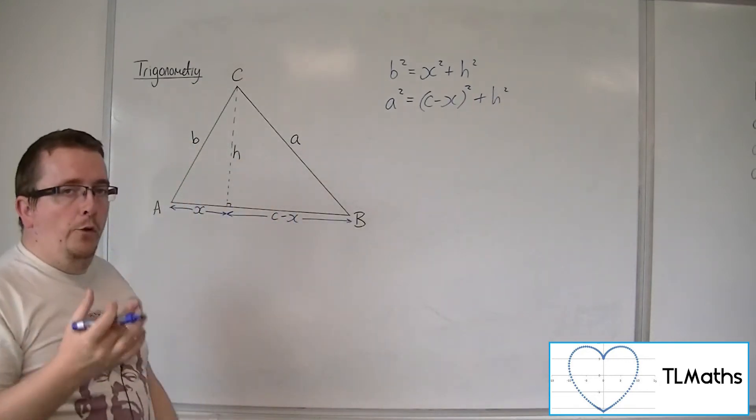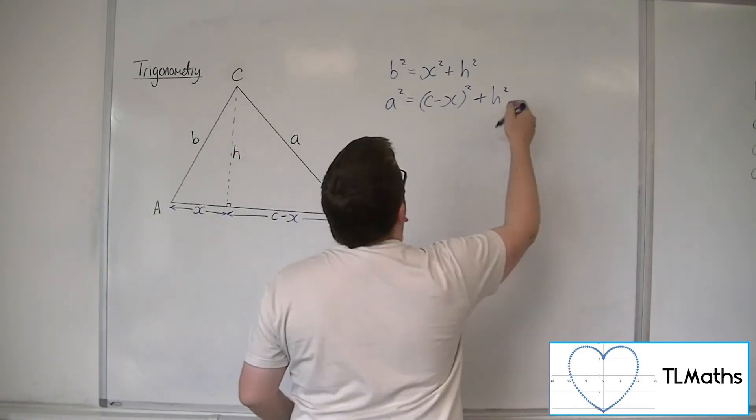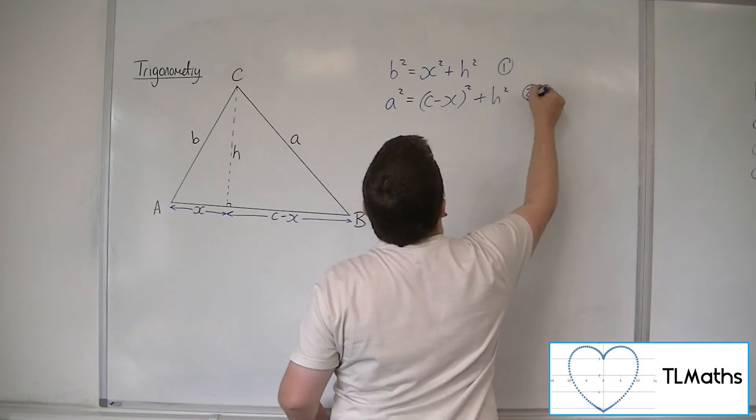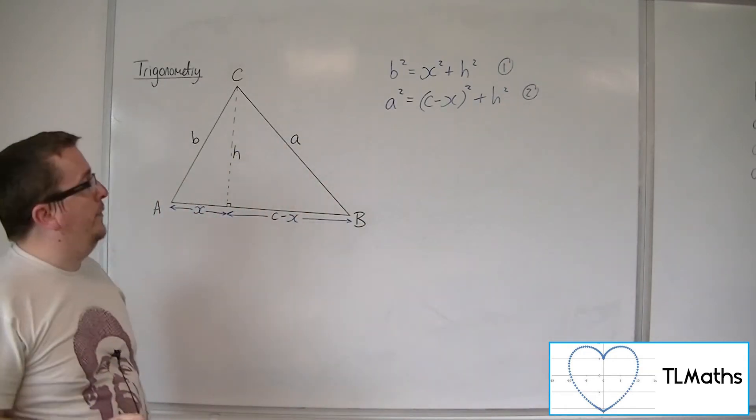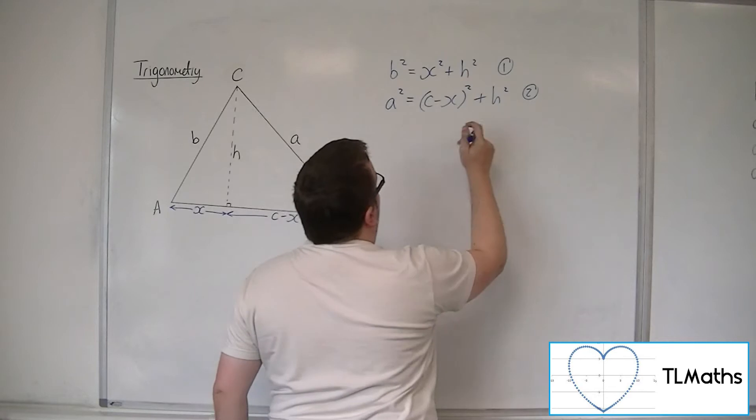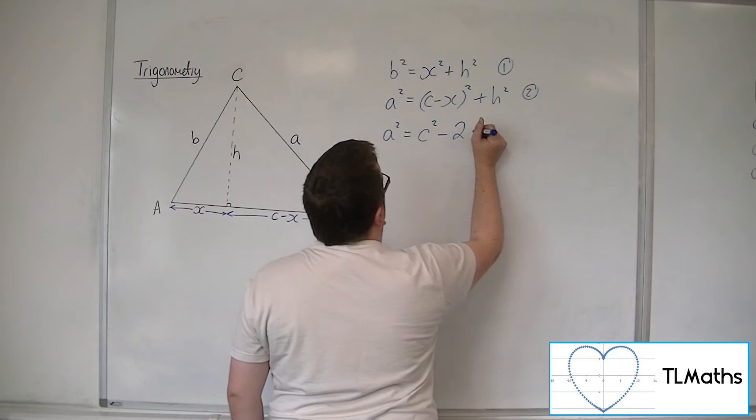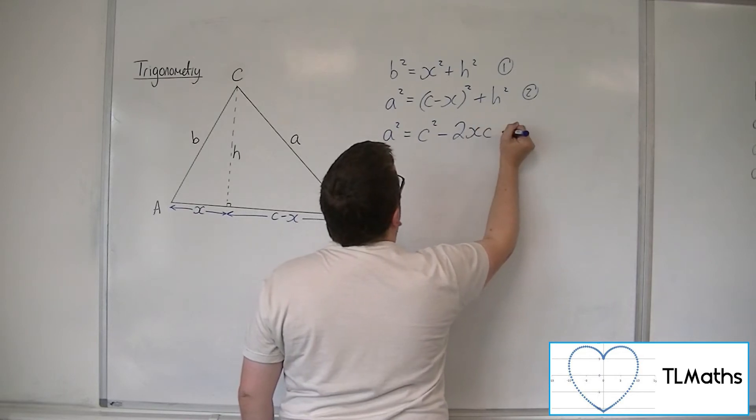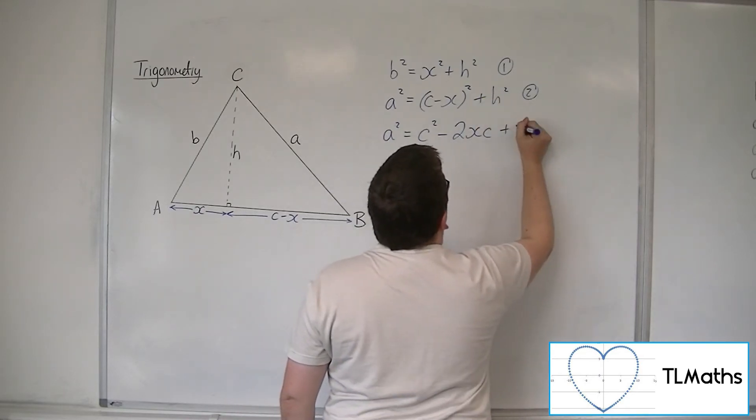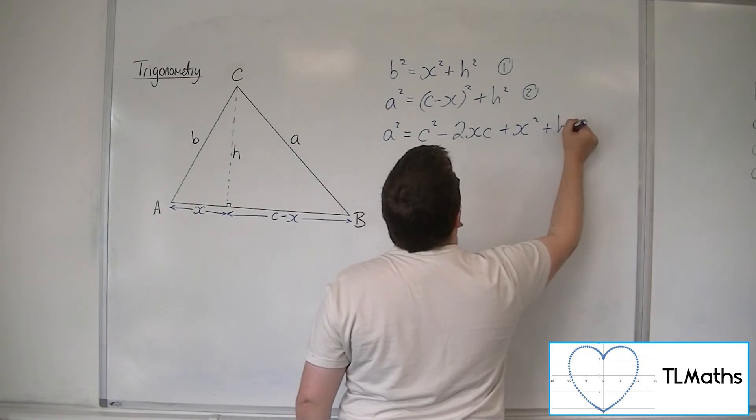Let's multiply this second one through. So we've got these two equations using Pythagoras. If we multiply the second one through, then A squared is C squared minus 2XC plus X squared plus H squared.